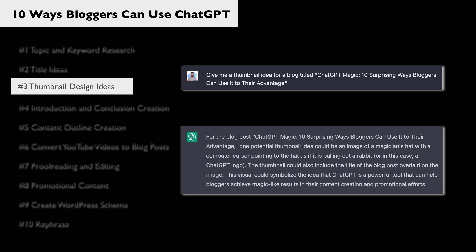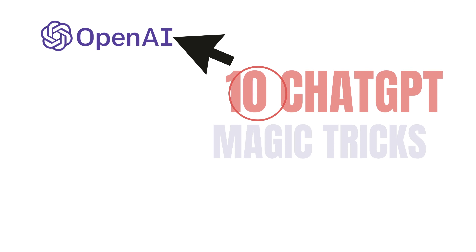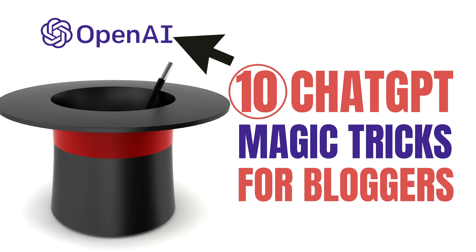It gave me this: one potential thumbnail idea could be an image of a magician's hat with a computer cursor pointing to the hat as if it was pulling out a rabbit, or in this case a ChatGPT logo. The thumbnail could also include the title of the blog post overlaid on the image. The visual could symbolize the idea that ChatGPT is a powerful tool that can help bloggers achieve magic-like results in their content creation and promotional efforts. I went over to Canva and put this together, and I am happy with it.